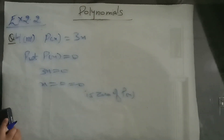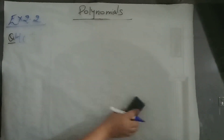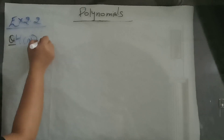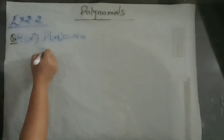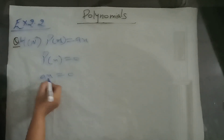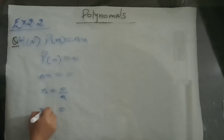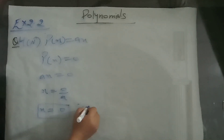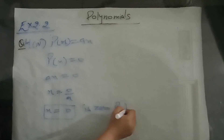Sixth part: p of x is equal to ax. Put p(x) equal to 0: a into x equal to 0, so x is 0 by a, which is 0. So 0 is the zero of this polynomial.